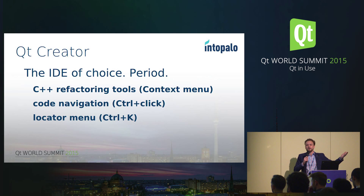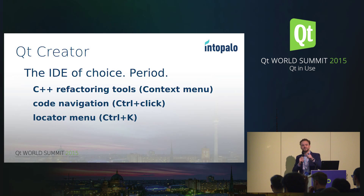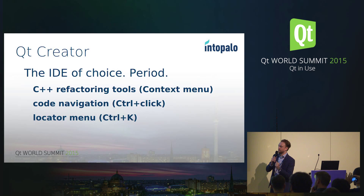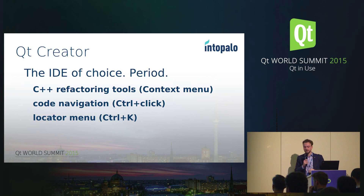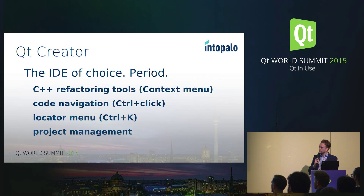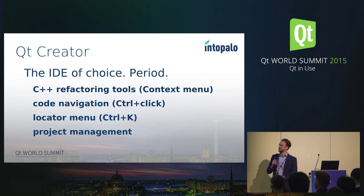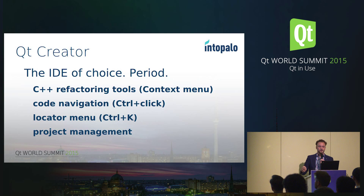The locator menu — check it out, it's in the lower left-hand corner, brought up by pressing Ctrl+K. You can do all sorts of stuff like finding files, which is what I usually use it for. But you can also locate symbols, jump to lines of code, even run external commands. Really though, project management — that's the whole reason I'm talking about this, because by using Qubes and Creator together, we can really improve our developer happiness.